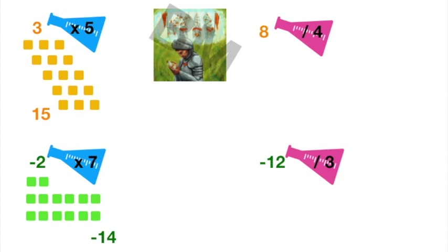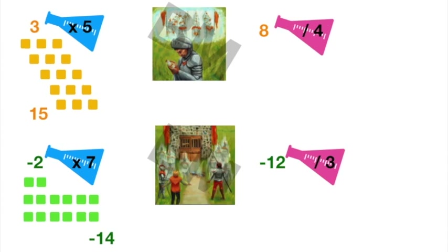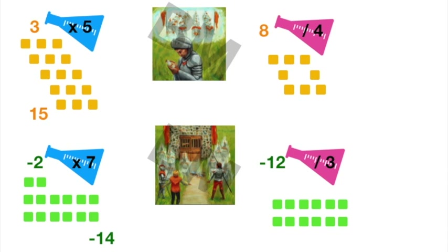If you're multiplying by a positive number, you're just duplicating what you started with — you get more of that same kind of thing. For division, you start with a group and split it. In the top right, starting with eight soldiers split into four pieces, each piece has two soldiers — eight divided by four is two. Down below, starting with twelve thieves split into three equal pieces, each piece has four thieves — so negative twelve divided by three is negative four. Multiplying or dividing by a positive value, you keep the sign of whatever you started with.